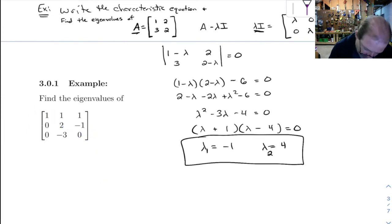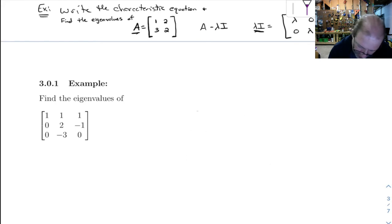Now, I didn't leave room for this example we just did. So I'm going to erase that. Then let's do this problem. So to find the eigenvalues of this guy, what we've got is 1 minus lambda, 1, 1, 0, 2 minus lambda, negative 1, 0, negative 3, and then 0 minus lambda. So we've got to take that determinant and set it equal to 0.